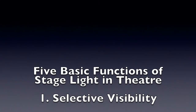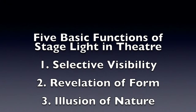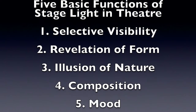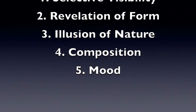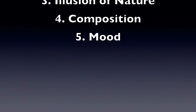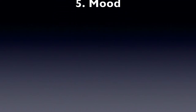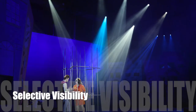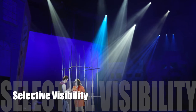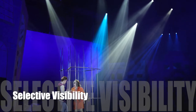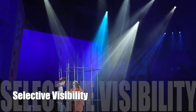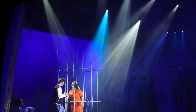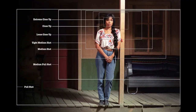We can use those nine controllable properties of light to form the five general functions of light: selective visibility, revelation of form, an illusion of nature, composition, and mood. Selective visibility means that we as lighting designers have the power to tell our audience where to look and where not to look. In film and TV they have cameras that dictate what is and isn't in the frame — they have explicit control over what the audience can see.